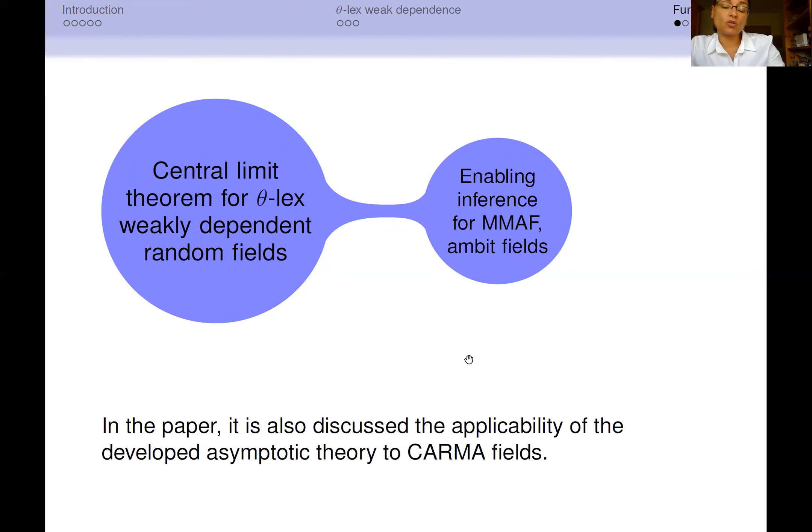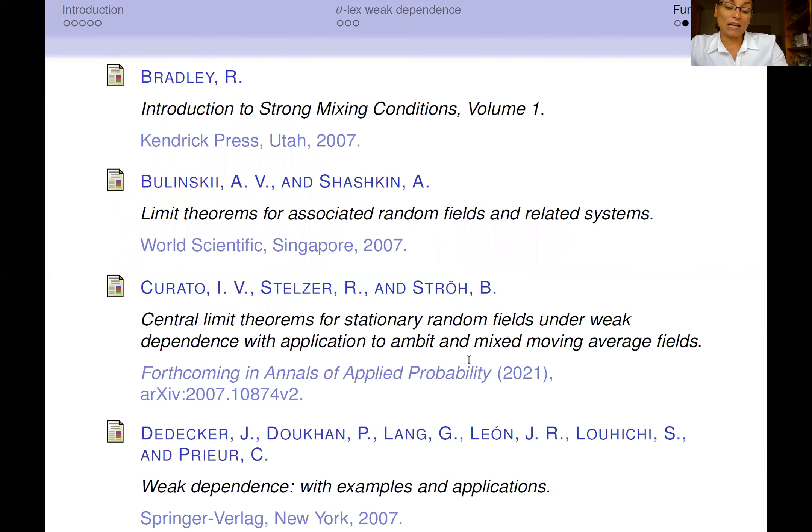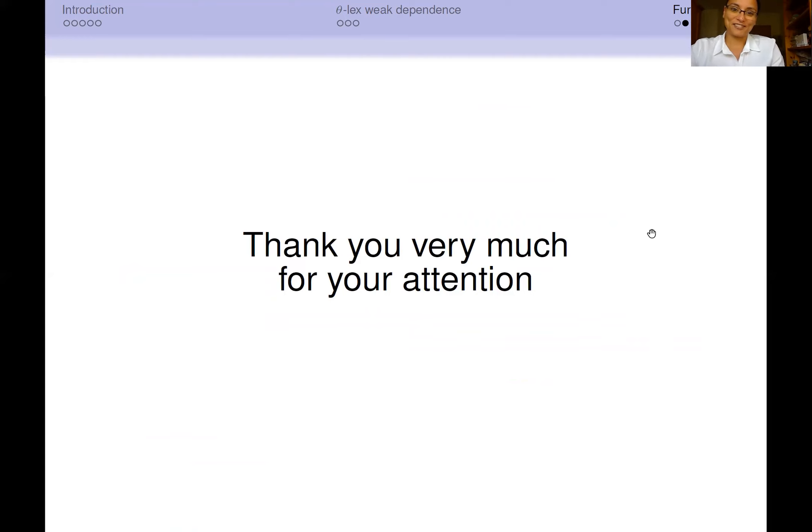Moreover, the paper also discusses the applicability of the developed asymptotic theory to common fields. I want to conclude by citing a paper that for the time being is just present on arXiv but is going to be soon available also in Annals of Applied Probability. The rest of the bibliography entries that you see here are related to the monographs where are discussed strong mixing, association, and in general weak dependence.